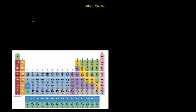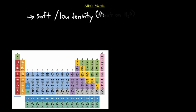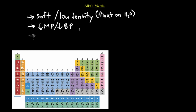Now let's talk about the physical and chemical properties of alkali metals. Alkali metals are soft metals with low density, so they will float on water. They have very low melting points and boiling points, meaning you can melt or boil them at low temperatures.